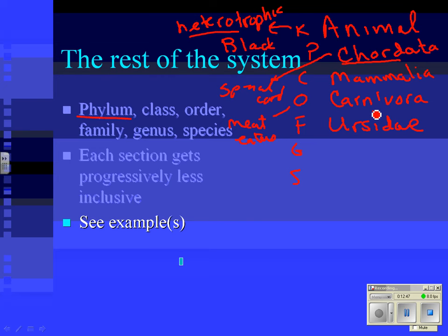Now we're talking specifically about a black bear. There are different kinds of bears — panda bears, polar bears, black bears, and brown bears. Black bears and brown bears are in the genus Ursus. And the black bear's species name is americanus — well, 'negron' which is Latin for black — so Ursus americanus would be a black bear. Kingdom, phylum, class, order, family, genus, species.